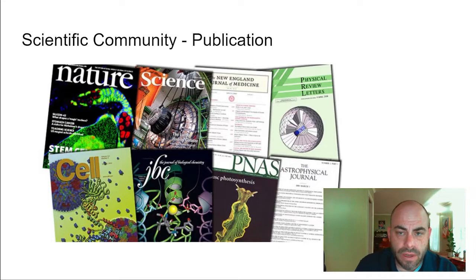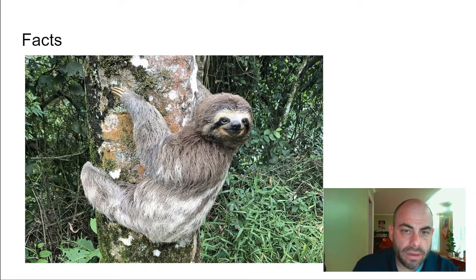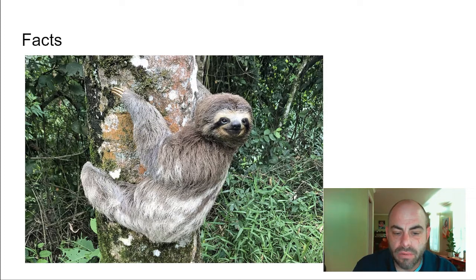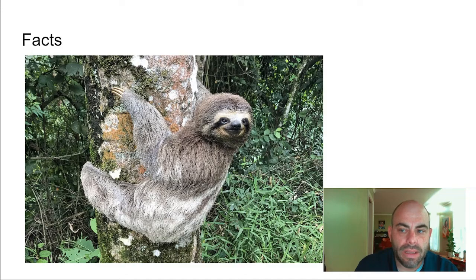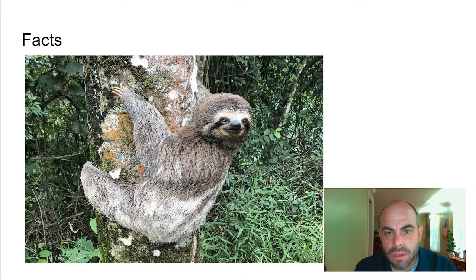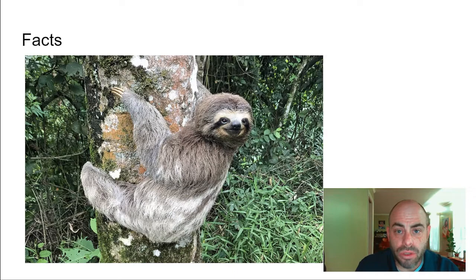There are a couple of words we use in the scientific community that are important to define. The first is the word 'fact.' In science, a fact is an observable kind of truth. Looking at this picture: that is a sloth — fact. That sloth is hanging on a tree — fact. He is surrounded by green things — fact. If you say that is a chicken, that's immediately disputable. That sloth is hanging on a mountain — no, it's hanging on a tree. We know what trees are and what mountains are.